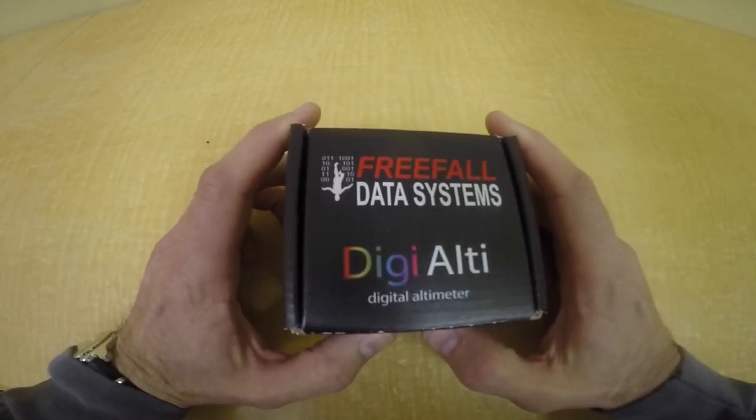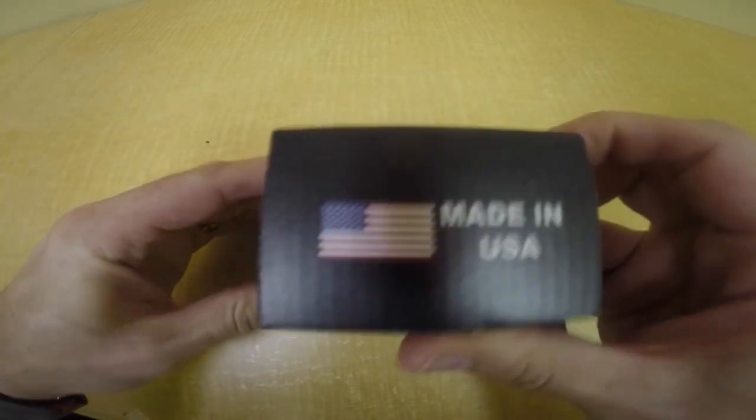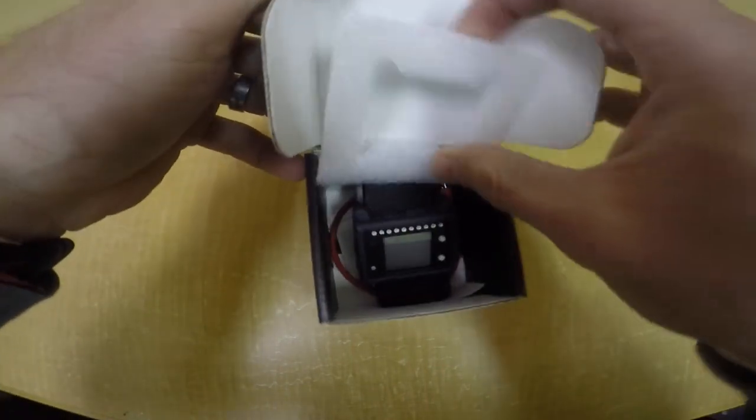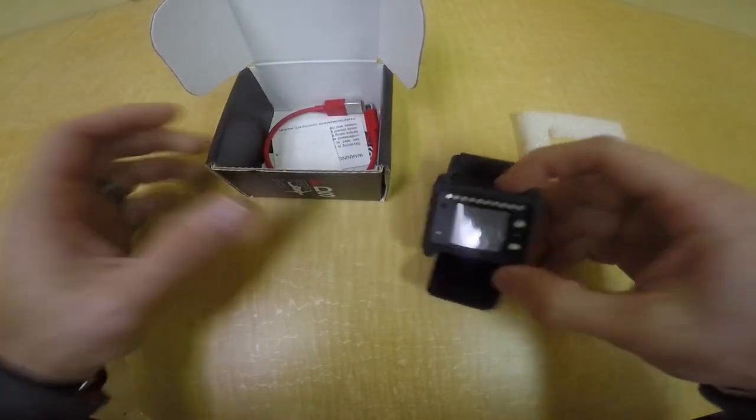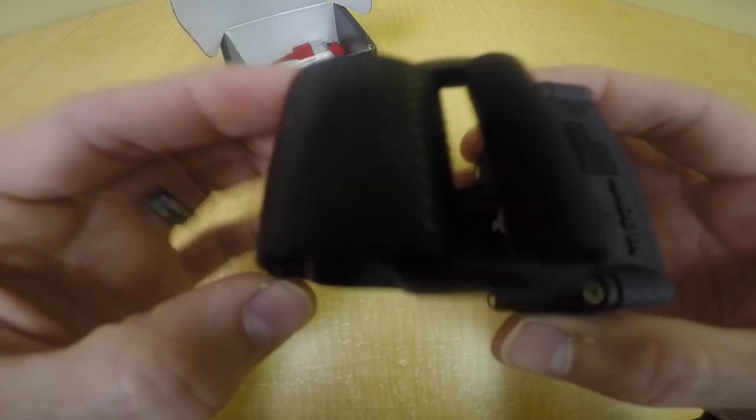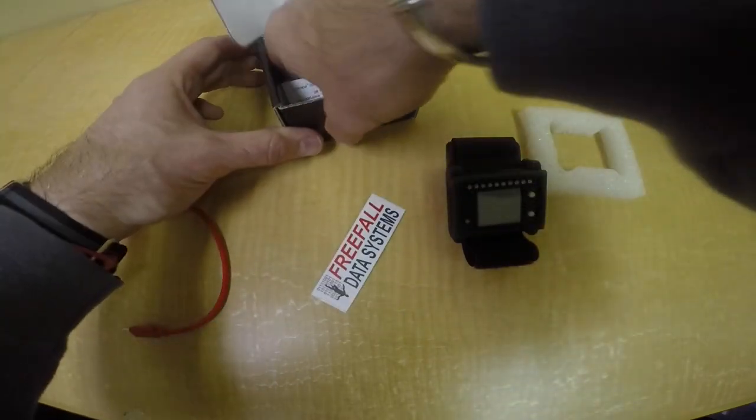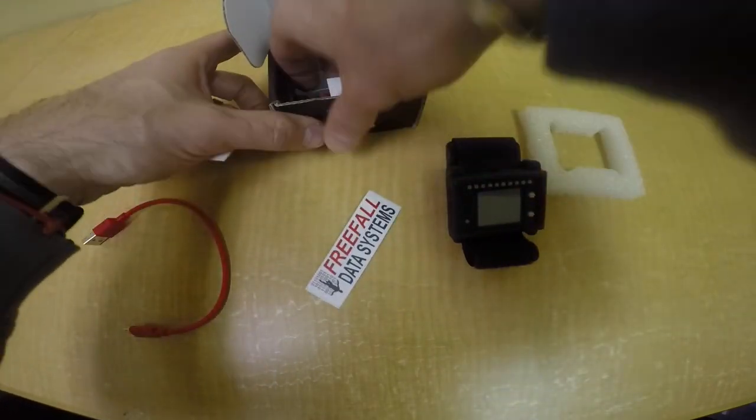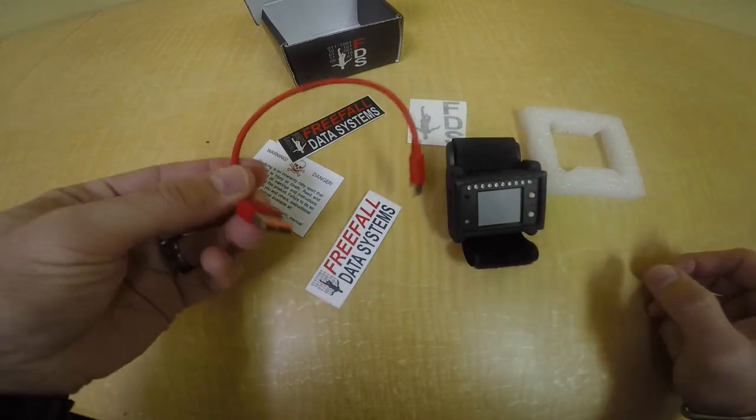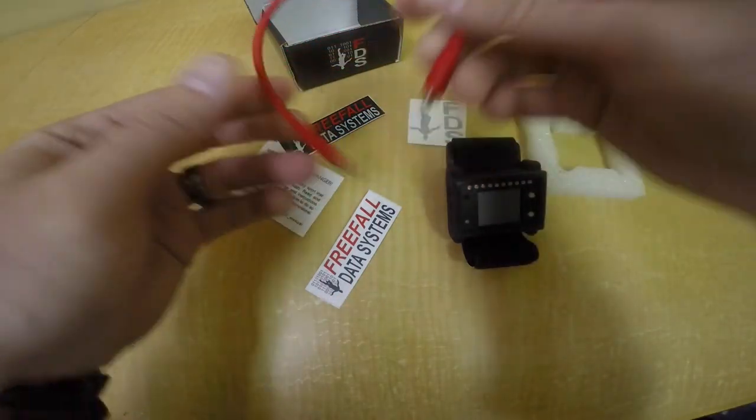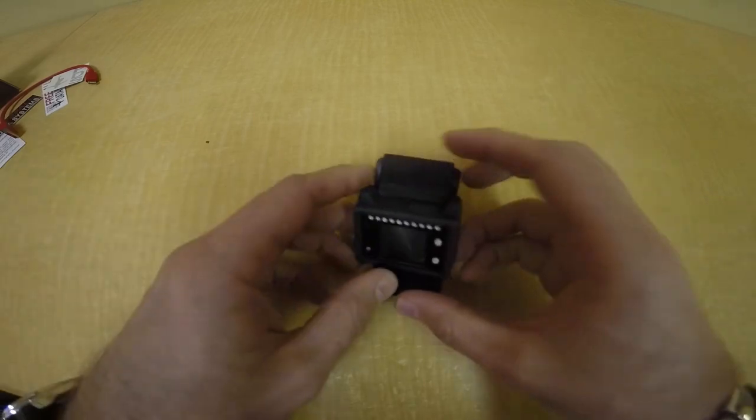All right, here it is. DGLT from Freefall Data Systems. Nice package box, made in the USA. All right, let's see what we have. Here's the unit. It comes with a Velcro wrist mount. We have some Freefall Data Systems stickers and warning label. And you have your USB charging cable. So let's put that aside and let's check out the altimeter itself.